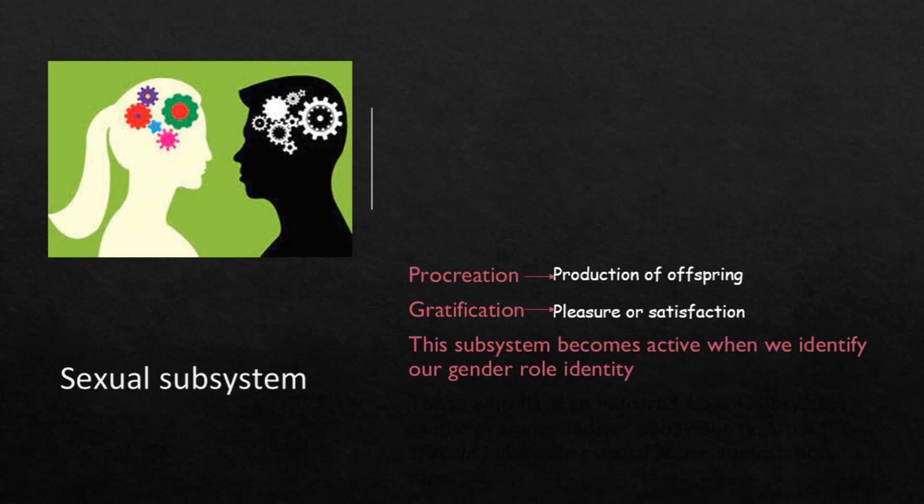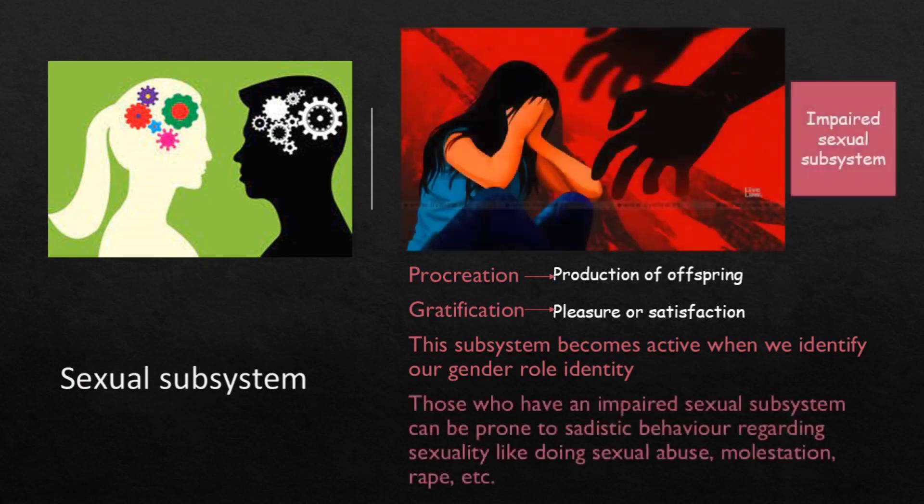The sexual subsystem has the dual functions of procreation and gratification. According to Dorothy Johnson, it is not only limited to sexual urge — it includes procreation, that is producing offspring and continuing future generations, and gratification, meaning pleasure or satisfaction. This subsystem becomes active when we identify our gender role identity — a boy becomes aware of his sexual characteristics, is attracted to a girl, understands the differences, and recognizes certain responsibilities. Those who have an impaired sexual system can develop sadistic behavior regarding sexuality.